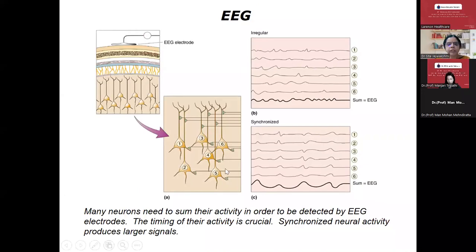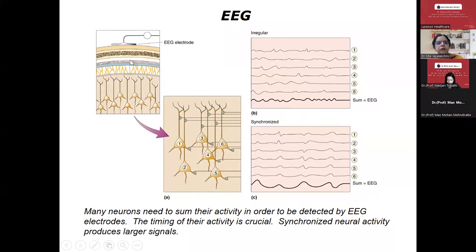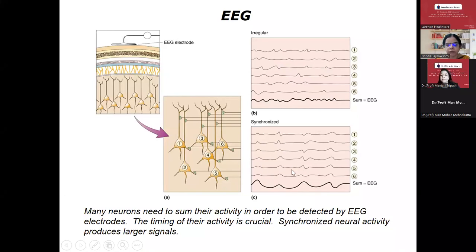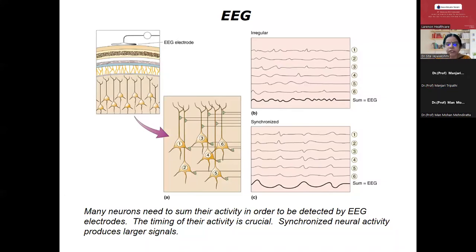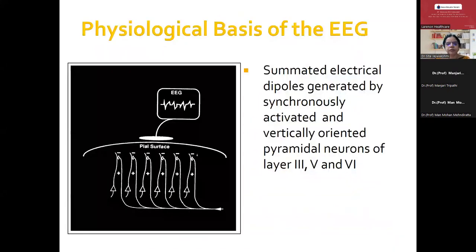What are we recording in the EEG? It is the summation of activity of many neurons, which should fire synchronously. During the time when there is no synchronous firing, the EEG looks irregular. Whenever there is synchronous firing, the EEG looks very clear. It is important that EEG is recorded only when synchronous firing occurs — which usually happens during epileptiform discharges. So the physiological basis of EEG is the summated electrical dipoles generated by synchronously activated, vertically oriented dipoles from pyramidal neurons of layers 3, 5, and 6.